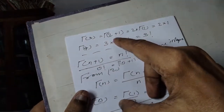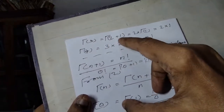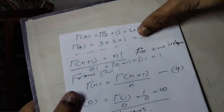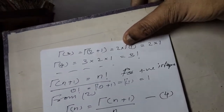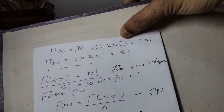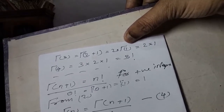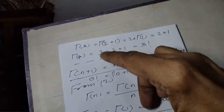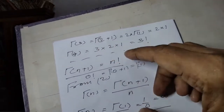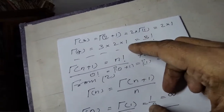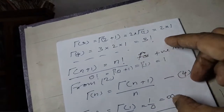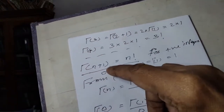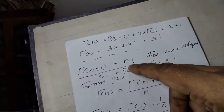For gamma(3): gamma of 2 plus 1, using gamma(n+1) = n·gamma(n), gives 2 times gamma(2) = 2 times 1 = 2, which is 2 factorial. For gamma(4): gamma of 3 plus 1 gives 3 times gamma(3) = 3 times 2 times 1, which is 3 factorial. In general, gamma(n+1) = n factorial.